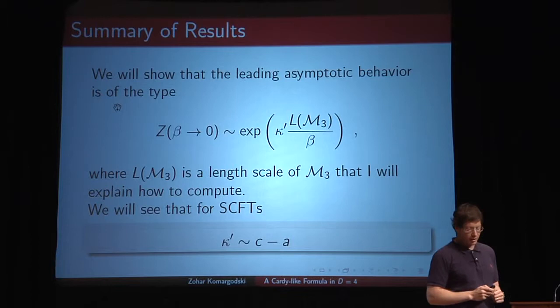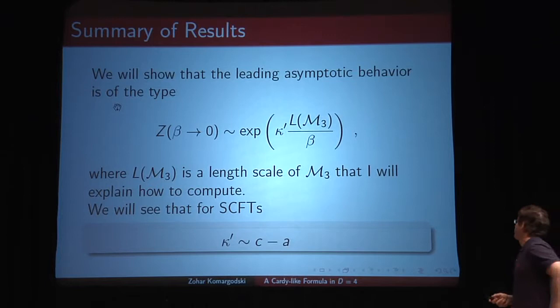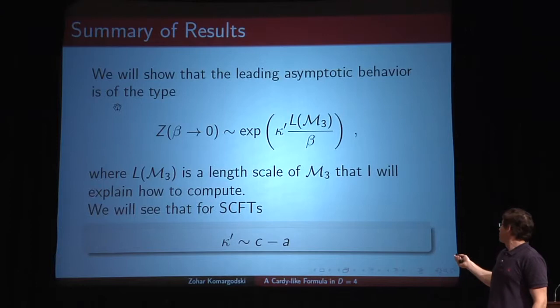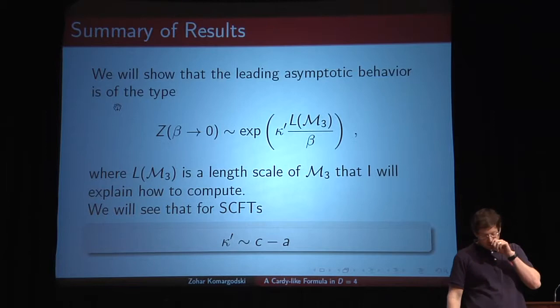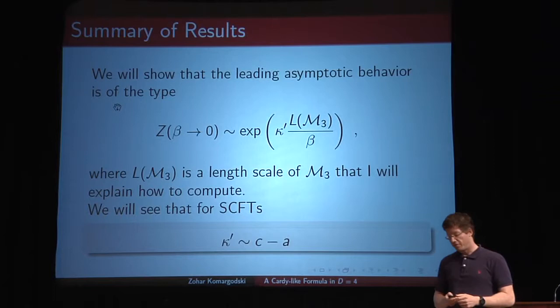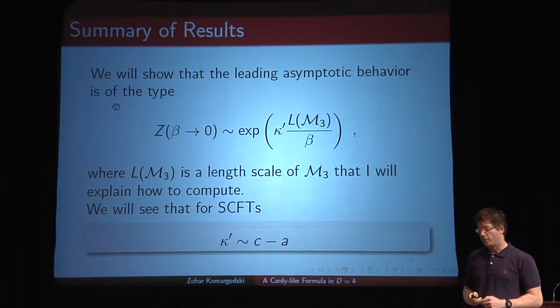One of the results I will derive — through a complicated path involving hydrodynamics — is that when you take the circle to be very small or the temperature very large, these partition functions have a universal asymptotic behavior which does not contain the volume term but does contain a length scale L, with a linear dependence in temperature. More interestingly, the coefficient kappa prime is completely fixed by the anomalies of the underlying four-dimensional field theory — very reminiscent of Cardy's formula — and this formula has various implications about the structure of BPS operators.